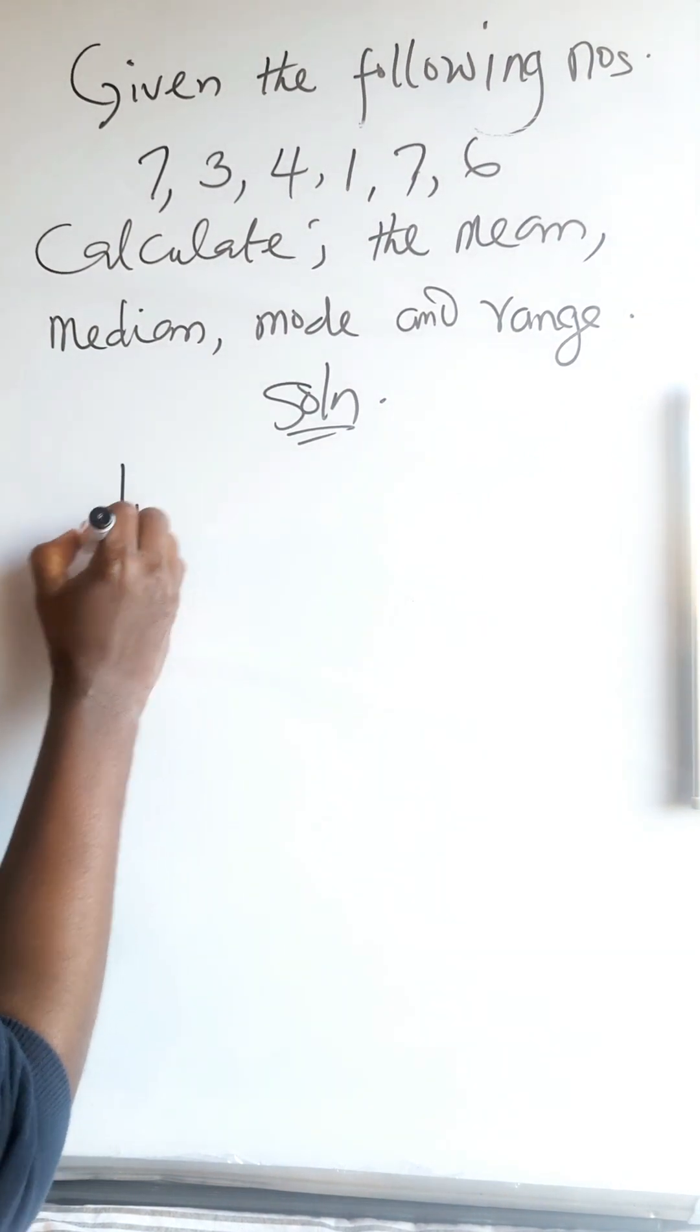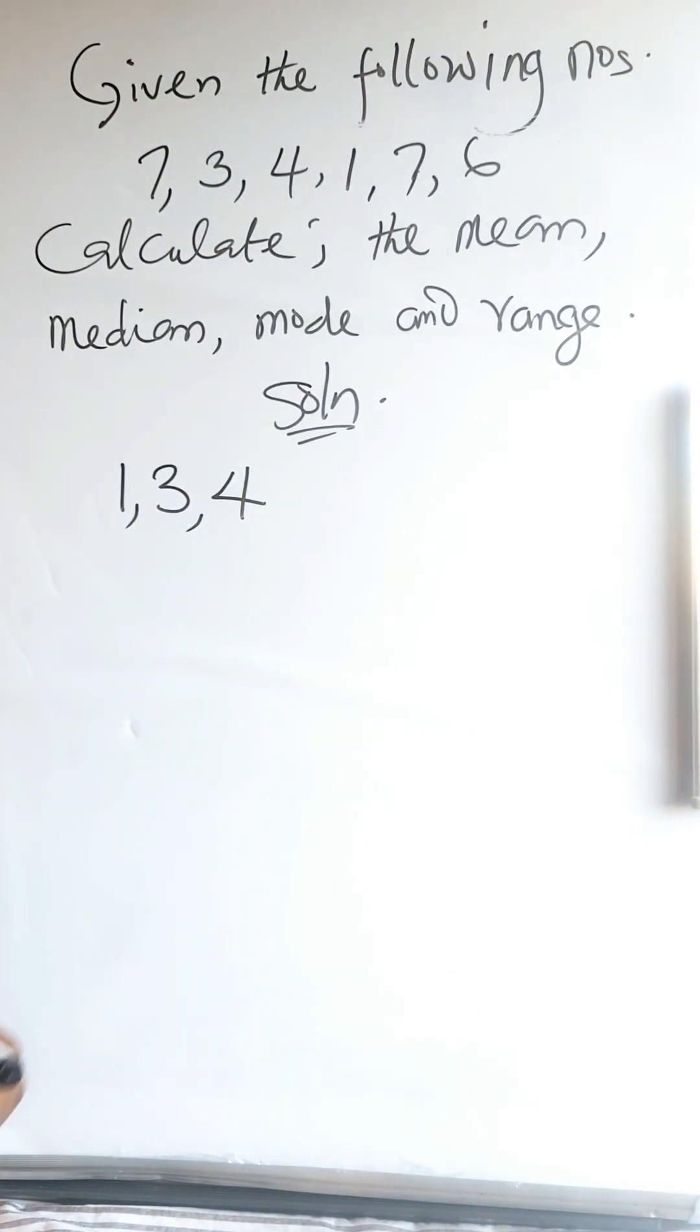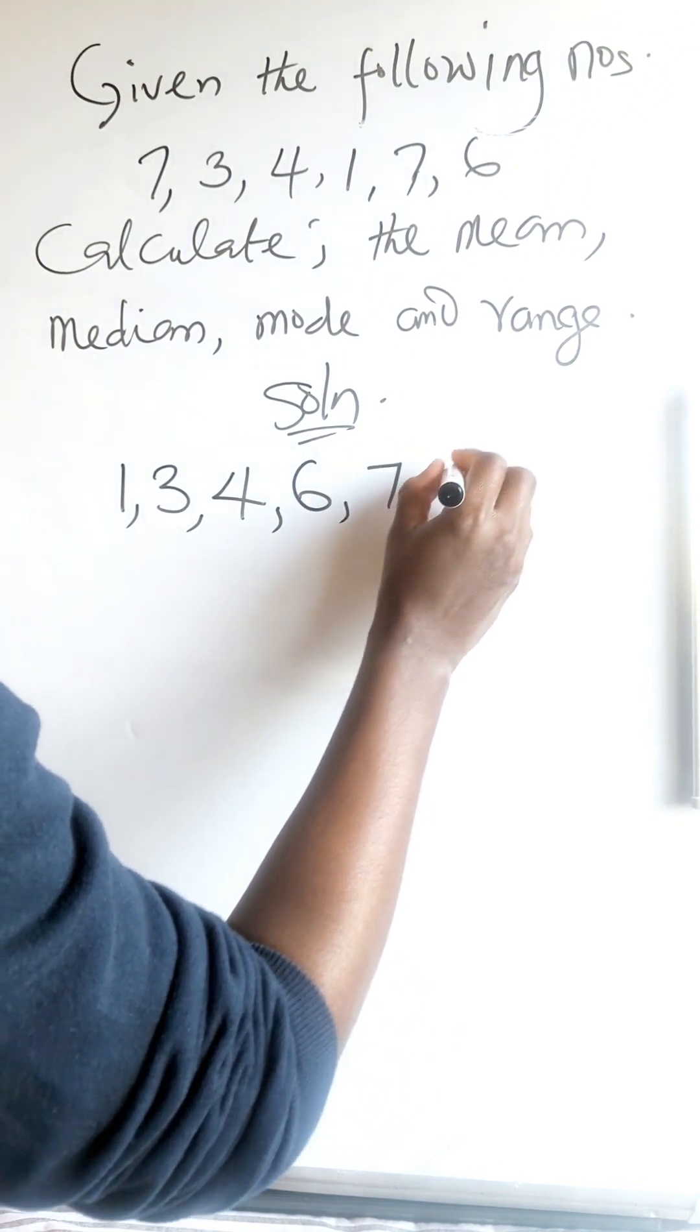So the first number I'll have is 1, 3, 4, 6, 7, 7.